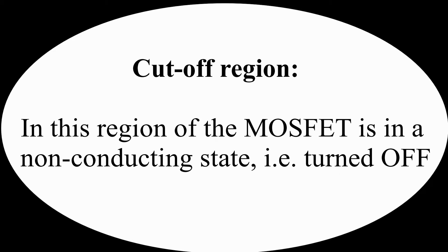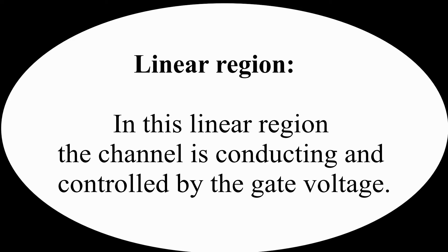Cut-off region: In this region, the MOSFET is in the non-conducting state—that is, turned off—and the channel current IDS is equal to zero. The gate voltage VGS is less than the threshold voltage required for conduction. Linear region: In this linear region, the channel is conducting and controlled by the gate voltage.